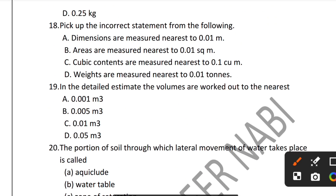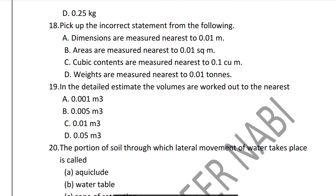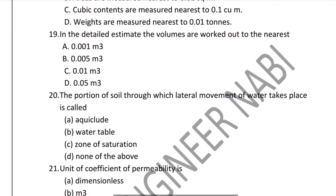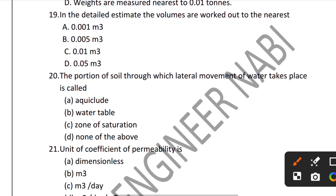Question 19: In a detailed estimate, the volume is worked out to the nearest 0.01 cubic meter. Option C — 0.01 cubic meter — is the correct answer.